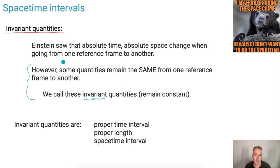So what's an invariant quantity? It's a quantity that remains constant—it remains the same from one reference frame to another. Now, there are a few invariant quantities that we know of. This one here, proper time interval, we've already seen. That's delta T₀.